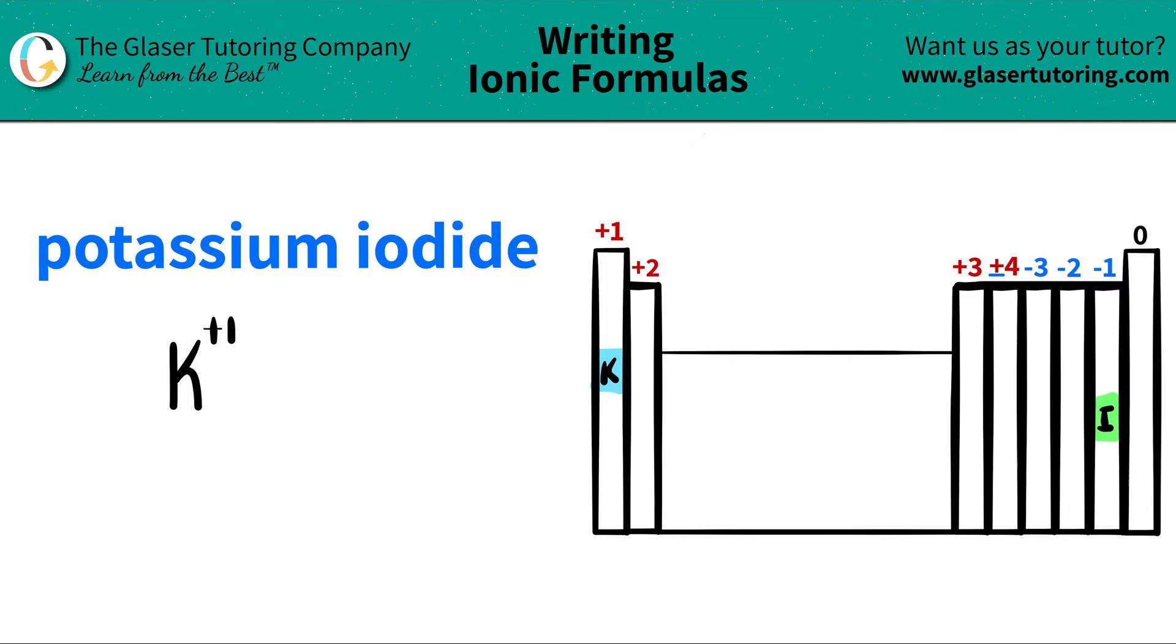Iodine is represented by just the letter I and it's in the halogen group. Halogens have a negative one oxidation trend so I'm just going to write I and then it has a negative one charge.